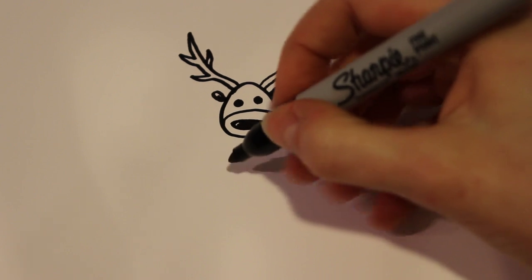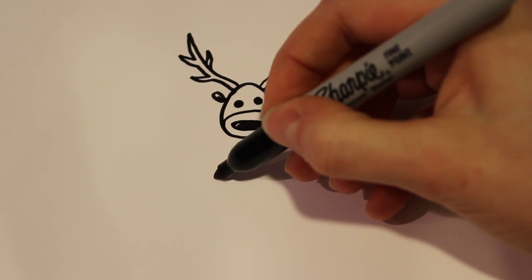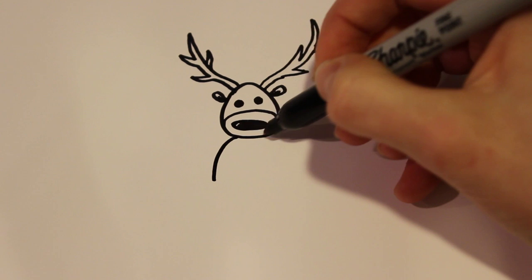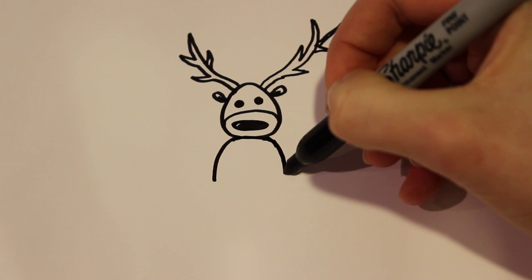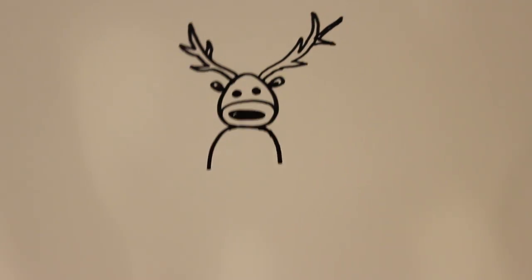For the body, all you want to do is add kind of an upside-down circle shape. I'm going to trace that all the way to the other side of the face and just end it right there for now.